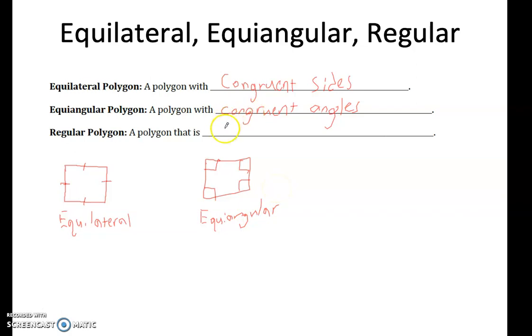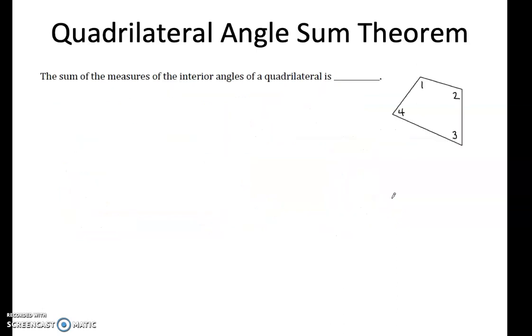A regular polygon is equilateral and equiangular. I'll just draw that square looking thing again and include the congruent angles as well. This is what we call a regular polygon.